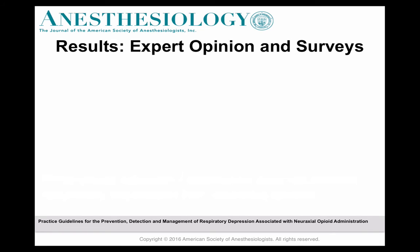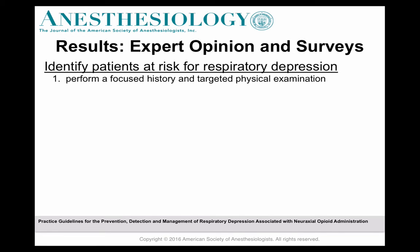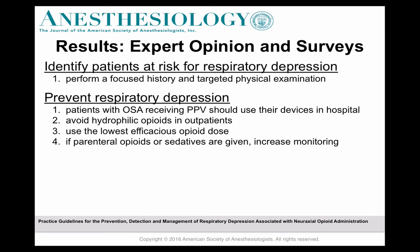There are also areas in the practice guideline supported only by expert opinion or survey results. The first is recommendations about how best to identify patients at risk for respiratory depression — performing a focused history and targeted physical examination to identify those at high risk is important. Regarding prevention, experts believe that patients with obstructive sleep apnea who are receiving positive pressure ventilation should use those devices in the hospital. The second expert recommendation is avoiding hydrophilic opioids in patients going home, because of the more delayed onset of respiratory depression in a small subset of patients who receive hydrophilic opioids.